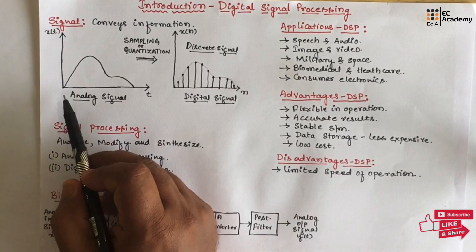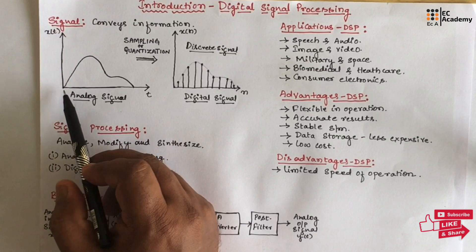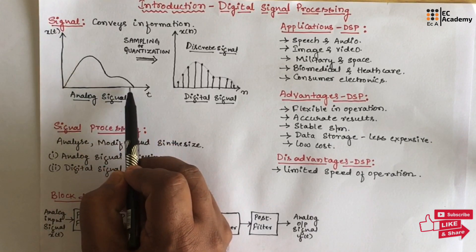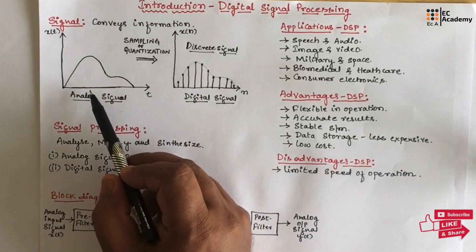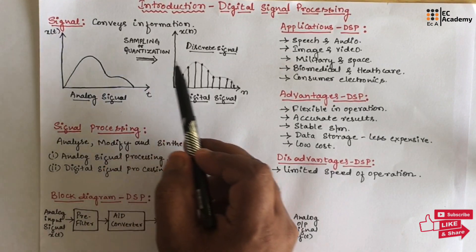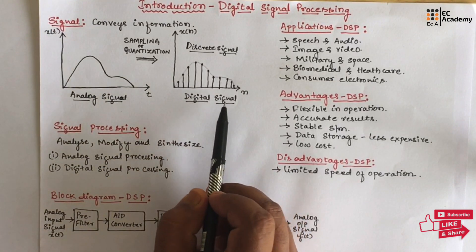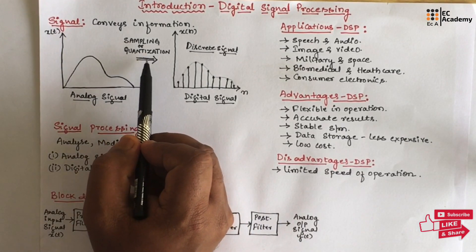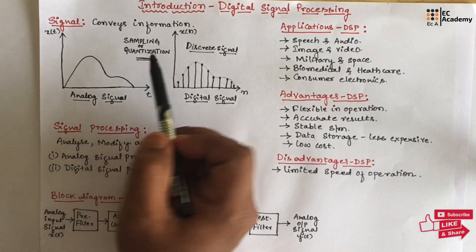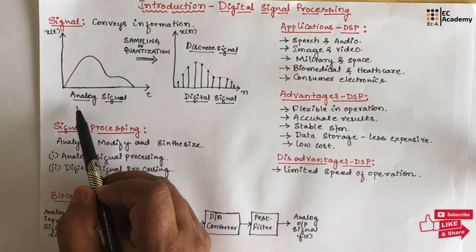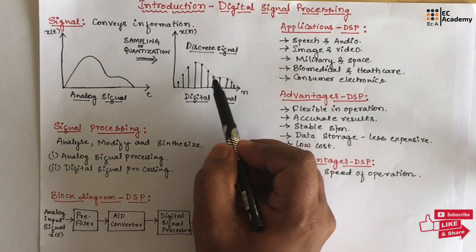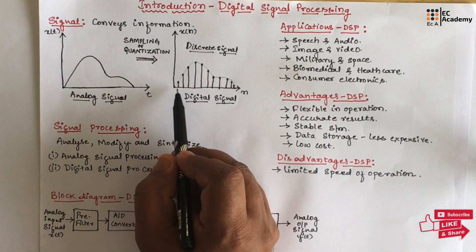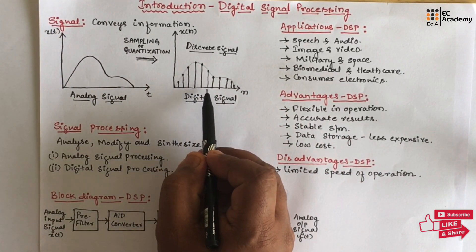Most of the signals are analog in nature, which means the signal will be continuous with respect to time. To convert a signal from analog to digital, we can use sampling and quantization. Using sampling and quantization, the analog signal is first converted into a discrete signal, in which the signal is sampled at discrete intervals of time.